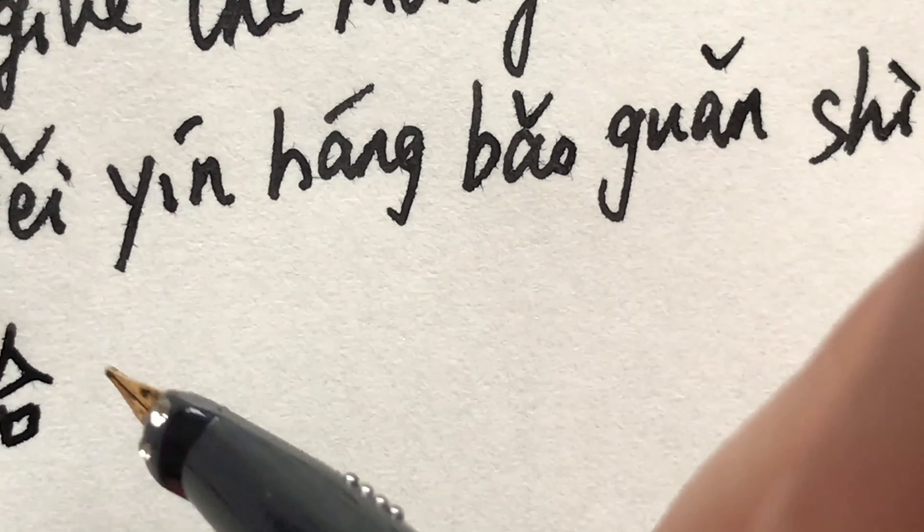Continuing to write: 给 (gěi). 把钱交给银行保管，是安全的. 給 (traditional form). Full sentence: 把钱交给银行保管是安全的. 给 (gěi), 吉 (jǐ).